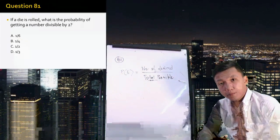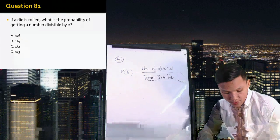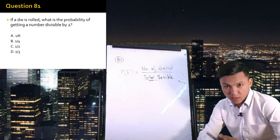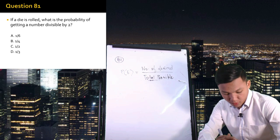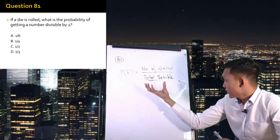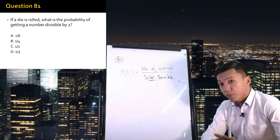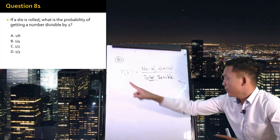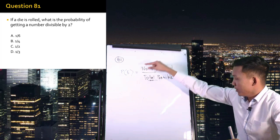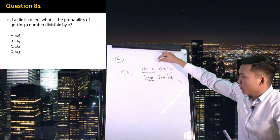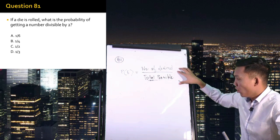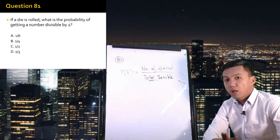Number 81: if a die is rolled, what is the probability of getting a number divisible by 2? We'll be using the same principle on getting the probability. The probability of any event to happen will be equal to the number of desired outcomes over total possible outcomes.